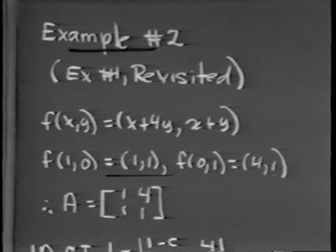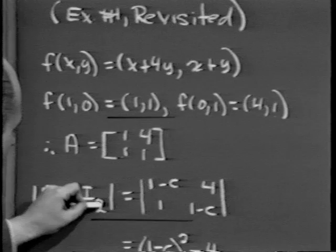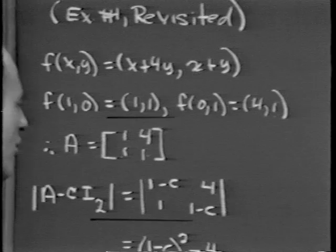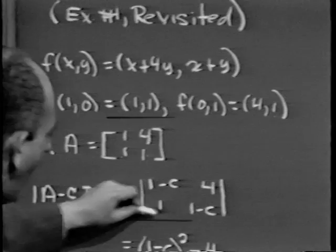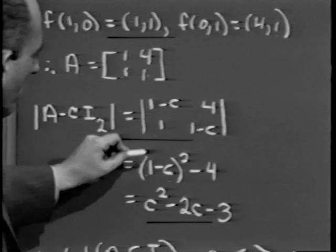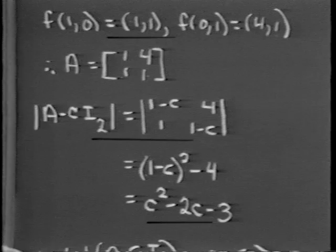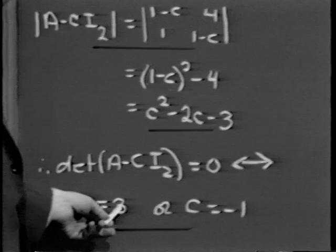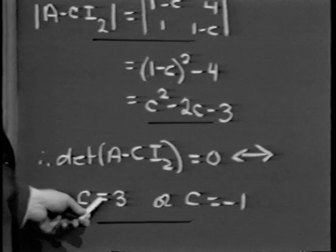To find the eigenvalues, we compute det(A − cI₂) by subtracting c from each diagonal element. The determinant is (1−c)(1−c) − 4·1 = c² − 2c + 1 − 4 = c² − 2c − 3. Setting this equal to zero, it factors as (c − 3)(c + 1) = 0. Therefore the only possible eigenvalues are c = 3 and c = −1.